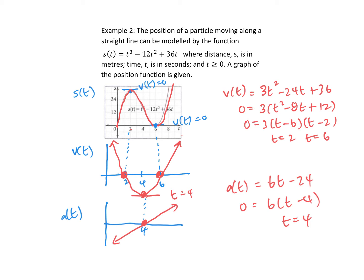For the acceleration: between zero and two it's below the x-axis, so it's negative. Between two and four it is also negative. Between four and six it is now above the x-axis, so it's positive. Between six and eight it's also positive. Looking at direction: the particle is going forward from zero to two, backwards from two to four, backwards from four to six, and then forward from six to eight.